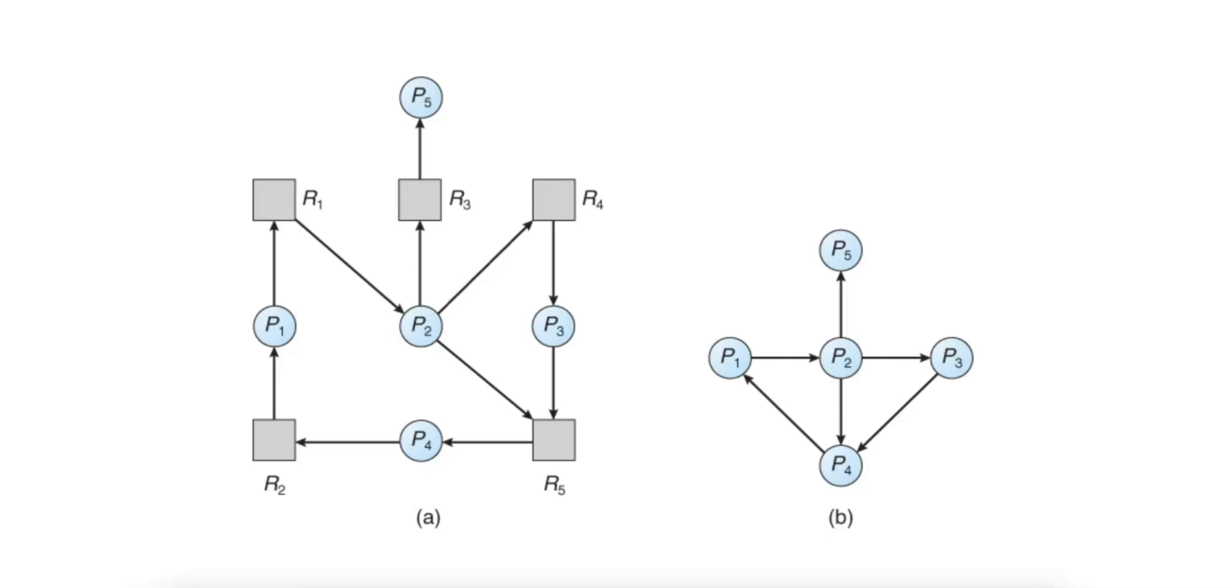The second condition is hold and wait. A process holding resources must not wait for additional resources. The prevention strategy is to require processes to request all resources at once, ensuring that they don't hold resources while waiting for more.